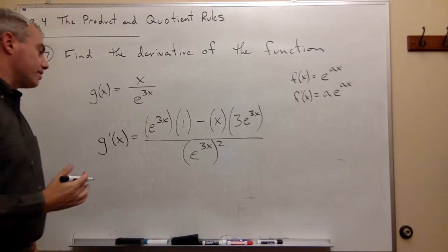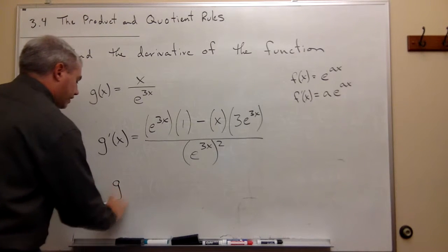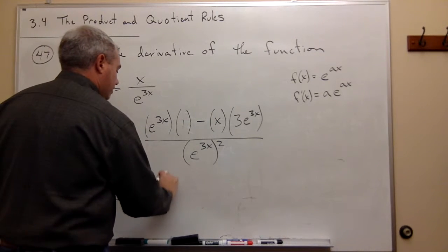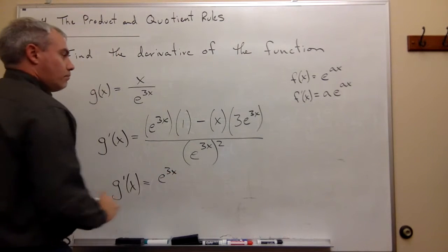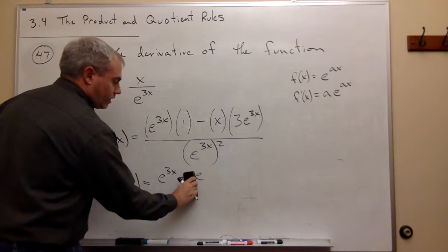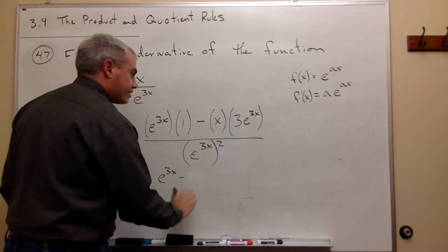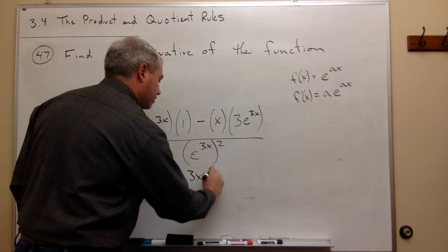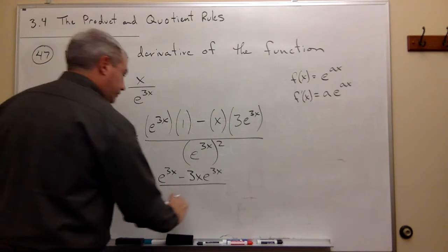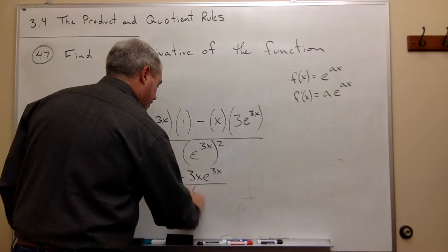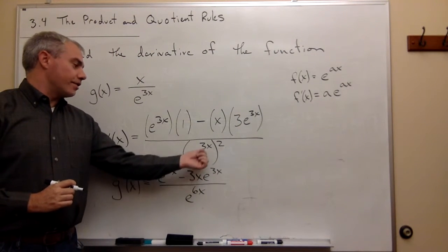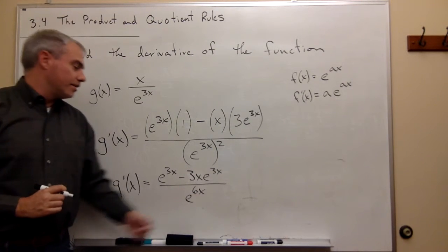Now, we could simplify this a little bit if we wanted to. We could write this as g prime of x is equal to, this is e to the 3x, minus 3x e to the 3x, all divided by e to the 6x. Because this is e to the 3x times e to the 3x, which is e to the 6x.